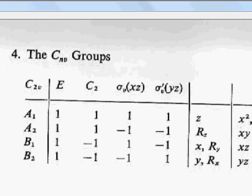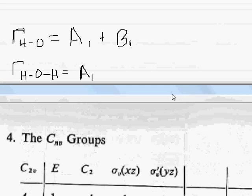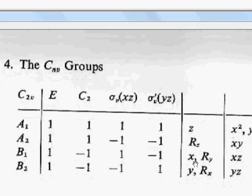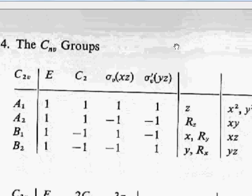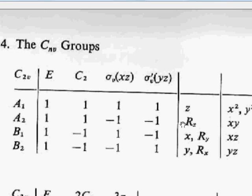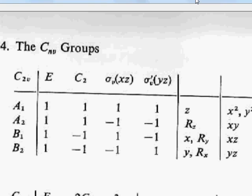And you can see, for A1 you have a Z, so that's going to be infrared. And for B1, you have an X, so that's also going to be infrared. Remember, if they have translational terms Z, X, or Y, you're going to get infrared in there.